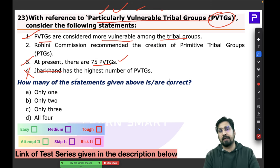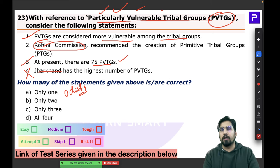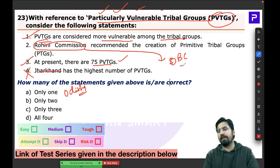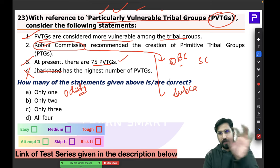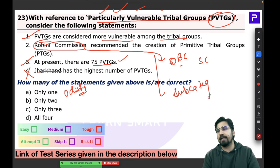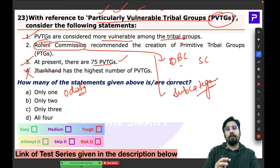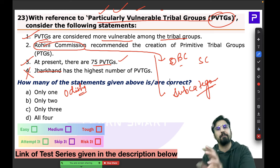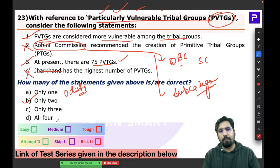The problem is with Statement 2 and Statement 4. It is Odisha that has the highest number of PVTGs, not Jharkhand. The Rohini Commission, which was recently in the news, relates to sub-categorization of OBC and SC castes — it has nothing to do with PVTGs. Statements 1 and 3 are correct, so the answer is only those two. This was an easy question.